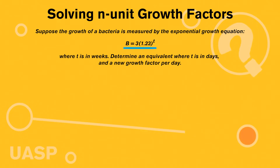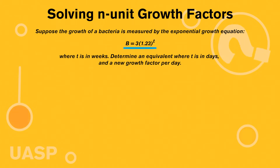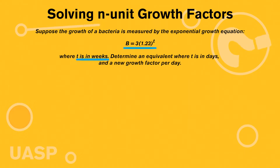The main thing to focus on here is what this t value means up in the exponent, and they tell us that t is in weeks. So that is the value that we put in there — we're looking at the growth of a bacteria across the lines of like three weeks, four weeks, something like that.